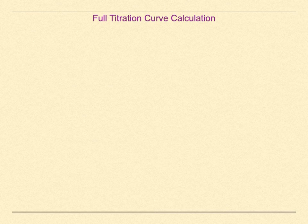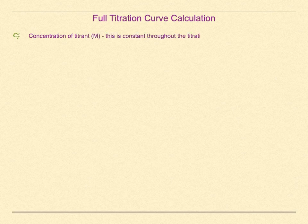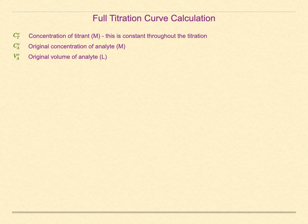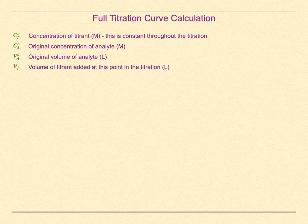Some definitions for our derivation: the concentration of the titrant — this is its concentration in the burette, not in the solution, and it is constant throughout the titration. The original concentration of the analyte — the analyte concentration changes throughout, but this is its value at the beginning, and it too is a constant. Note that we will be working in molarity, so both concentrations need to be reported in molarity. The original volume of the analyte also needs to be in liters. The volume of added titrant at any point in the titration is the variable that changes, and it needs to be reported in liters.